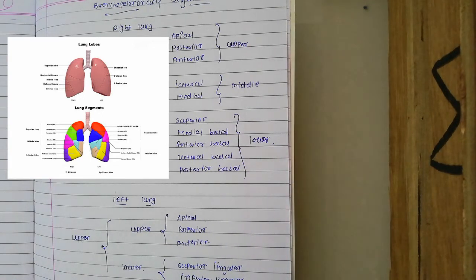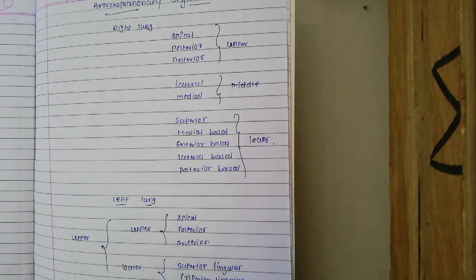The bronchopulmonary segments of the right lung are: apical, posterior, and anterior from the upper lobe; lateral and medial from the middle lobe; and superior, medial basal, anterior basal, lateral basal, and posterior basal from the lower lobe.